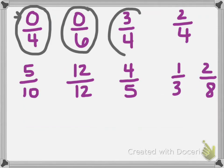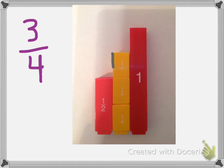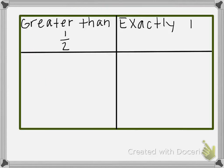The next fraction we're going to look at is 3 fourths. When you're looking at fractions, you can use fraction towers to help you. For 0 we have nothing, for 1 half we have the fraction tower that says 1 half, and for 1 whole we have the fraction tower that says 1 whole. Here I've taken 3 fraction towers each worth 1 fourth, so I have 3 fourths. We can see it's more than 1 half but less than 1 whole, so we're going to put 3 fourths in the greater than 1 half column.